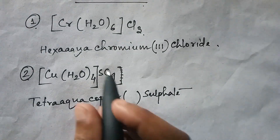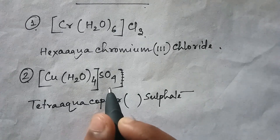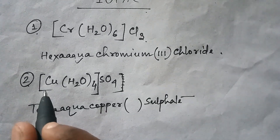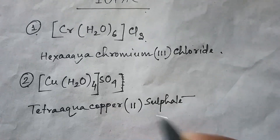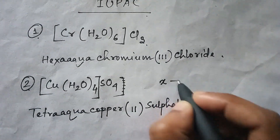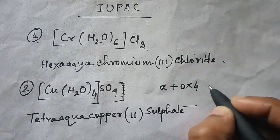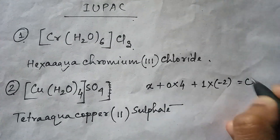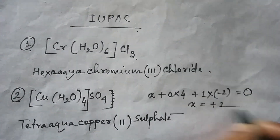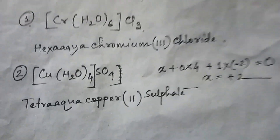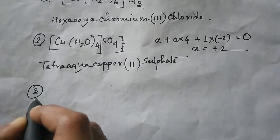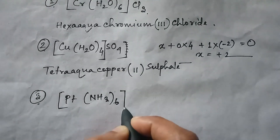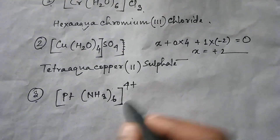Now, the sulfate ion is anionic with a 2 minus charge, and H₂O is neutral (zero). So the copper charge is obviously plus 2. You can also calculate it: let copper be X; H₂O contributes 0 × 4, and sulfate contributes 1 × (−2), giving X − 2 = 0, so X = +2. Write Roman numeral II.